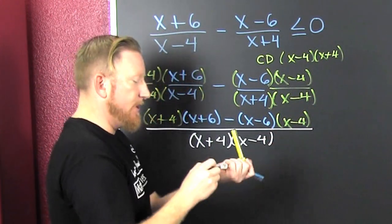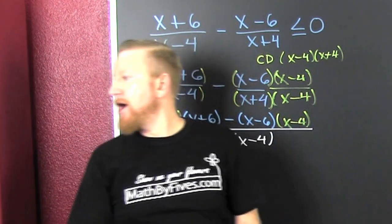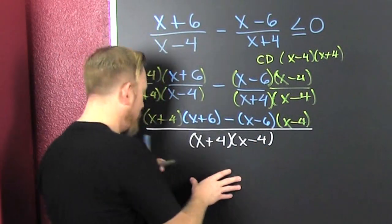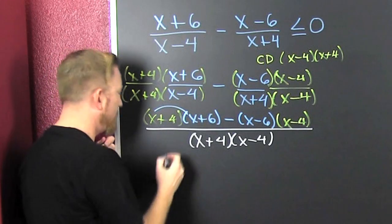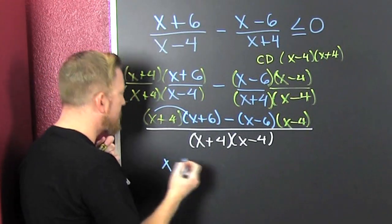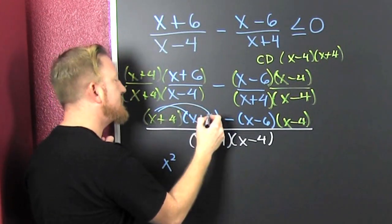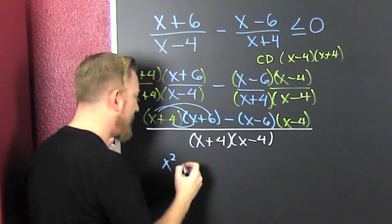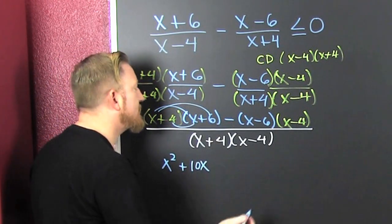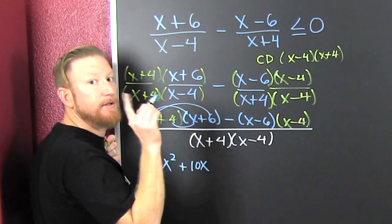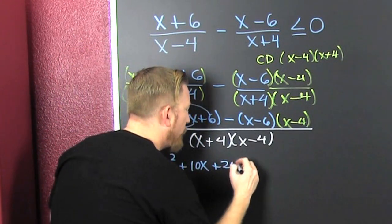Now what? First and last - we're gonna FOIL. Foiled again. That's an x squared, and then that's a 6x and a 4x making a 10x. You can check it on your own, pause it right here and check it. And then that's plus 24.